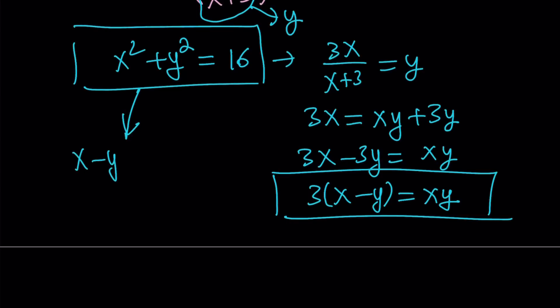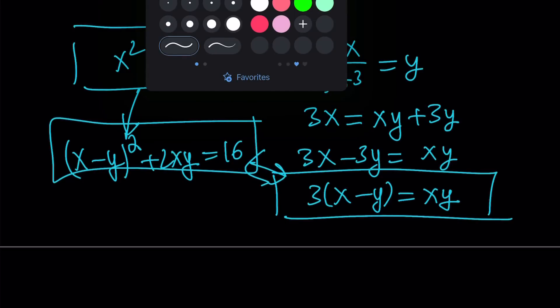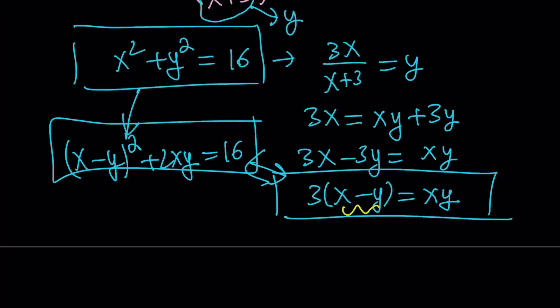For example, I can write this as x minus y quantity squared plus 2xy, which is what x squared plus y squared is, by the way. Plus, that is equal to 16. Now, here's what I can do. I can turn this, like these two, into a nice system. How about this? Let's go ahead and call this d for difference. And let's call this p for product. And we get the following.